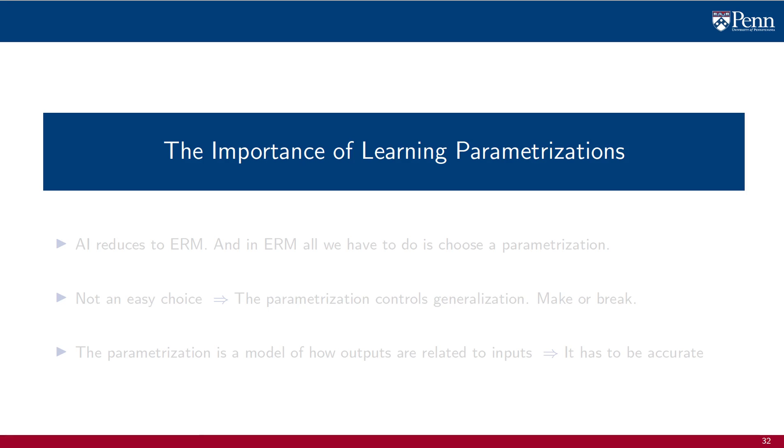We will close this lecture with a discussion on the importance of selecting the right learning parametrization. We have seen that artificial intelligence reduces to empirical risk minimization and that in ERM all we have to do is choose a learning parametrization.